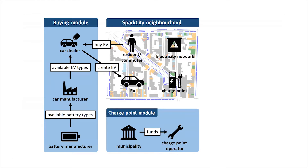The second module is the charge point module. The goal of the charge point module is to predict how many and what type of charging stations will be installed inside the neighborhood based on a certain municipality budget. The municipality gives funds to a charge point operator, and the charge point operator is able to install new charging stations inside the neighborhood.